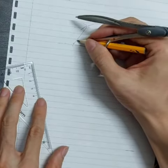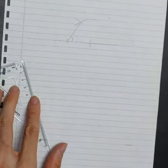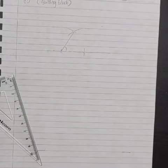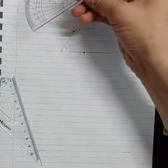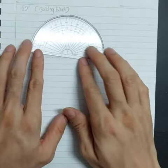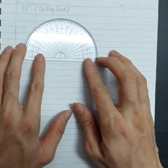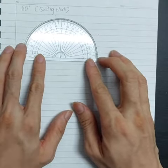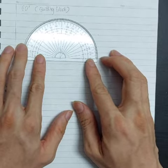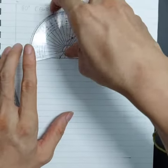This angle over here will be 60 degrees. You can also confirm this with the help of a protractor. You can just quickly measure it, and it is exactly fall on 60 degrees. That is how we construct a 60-degree angle.